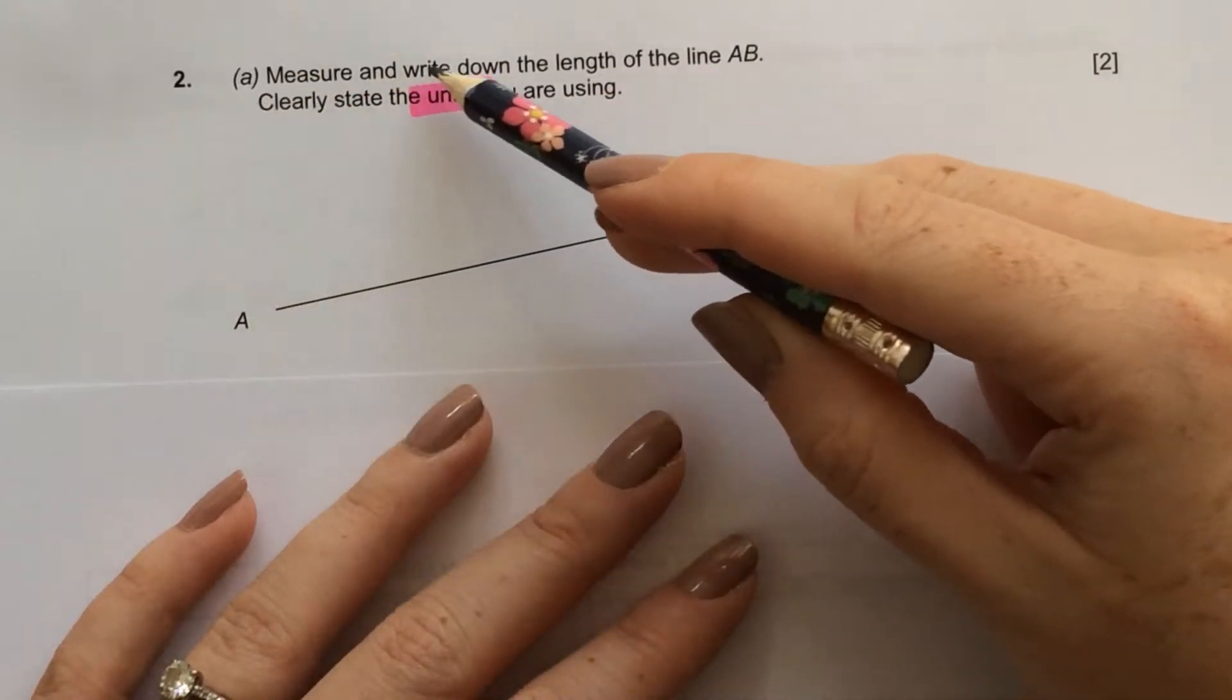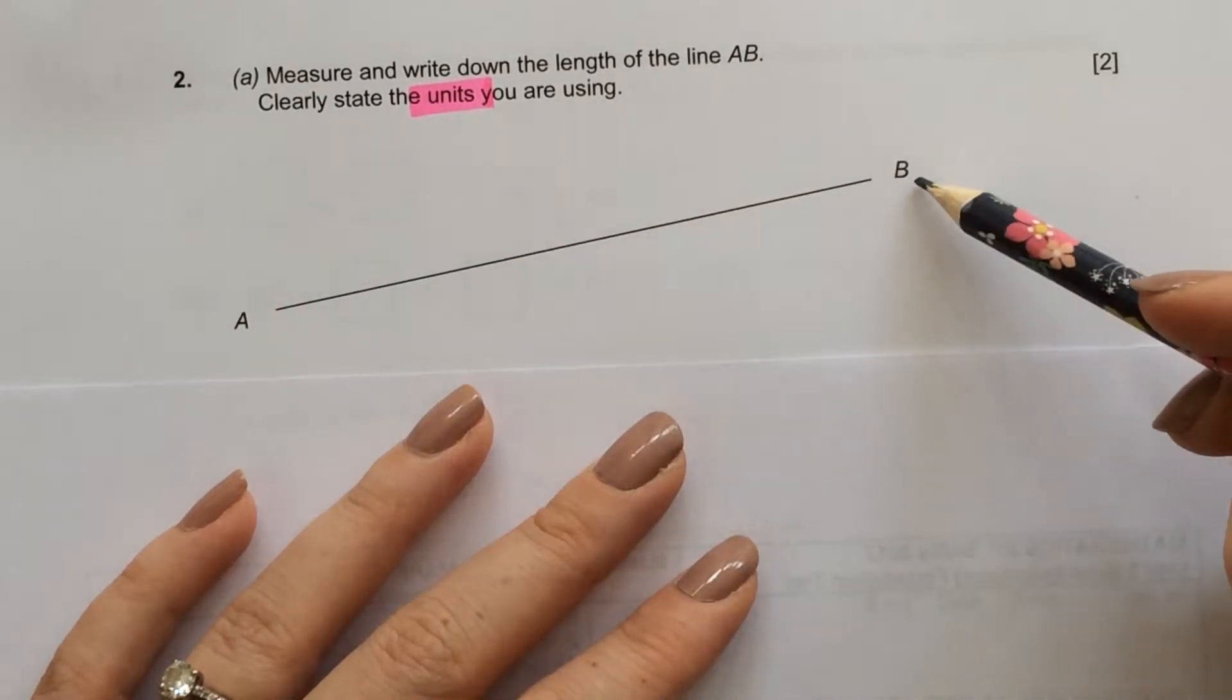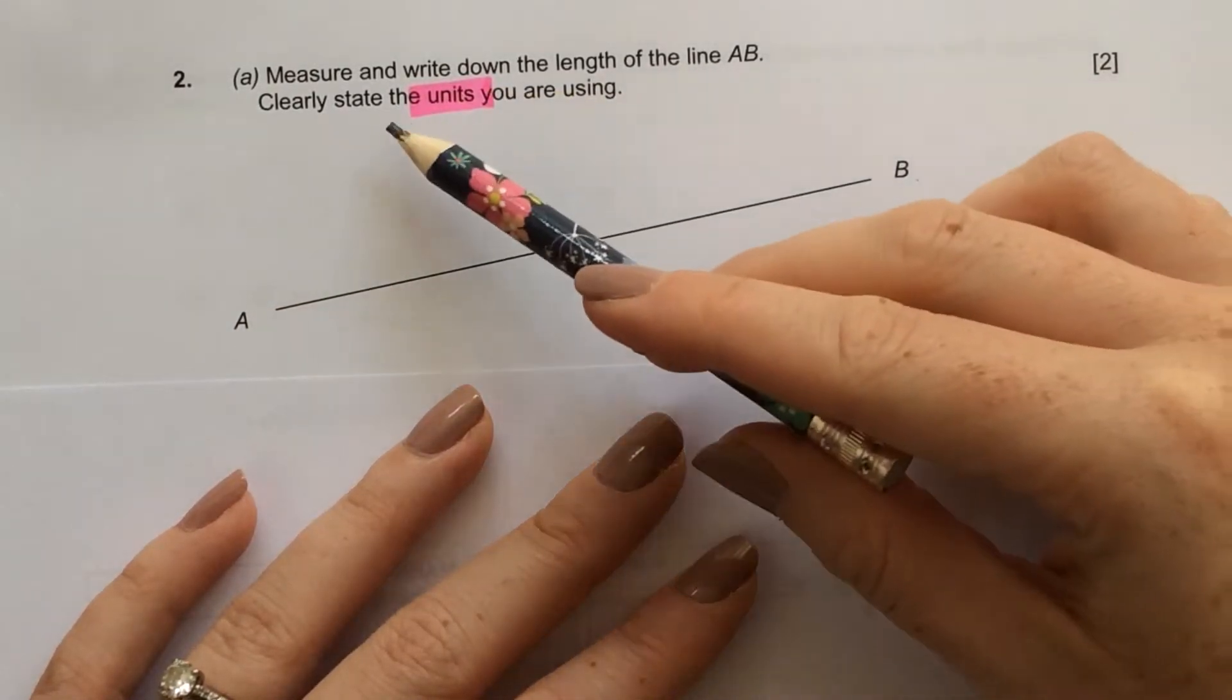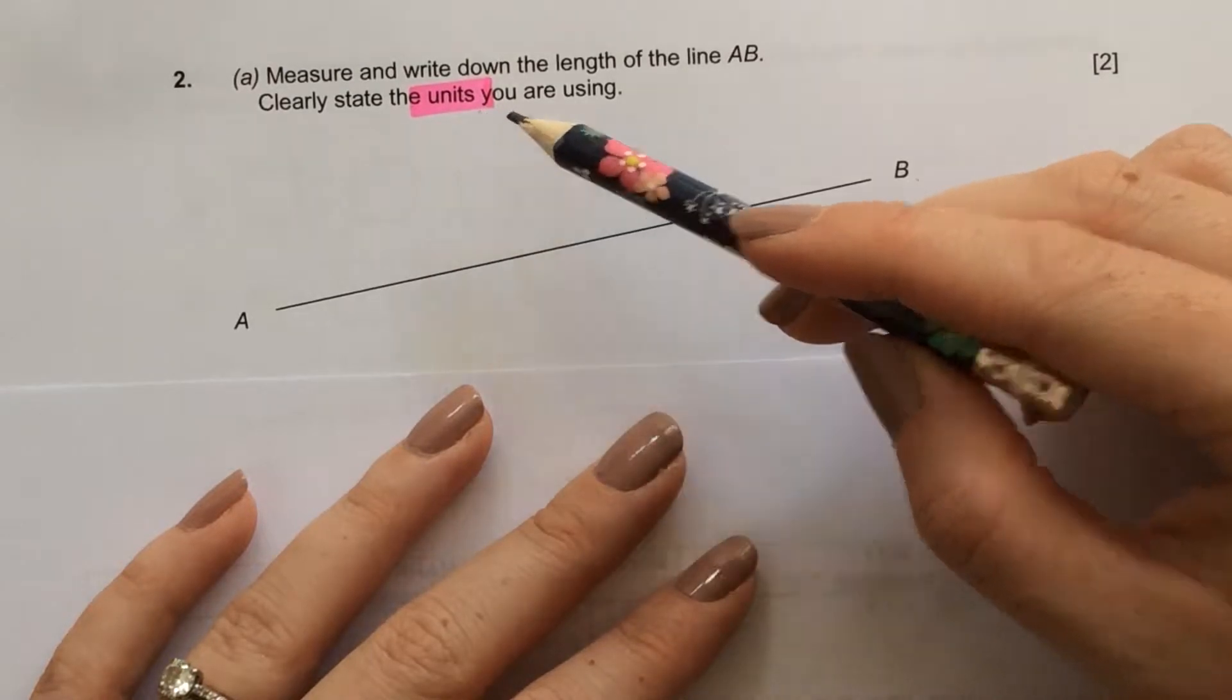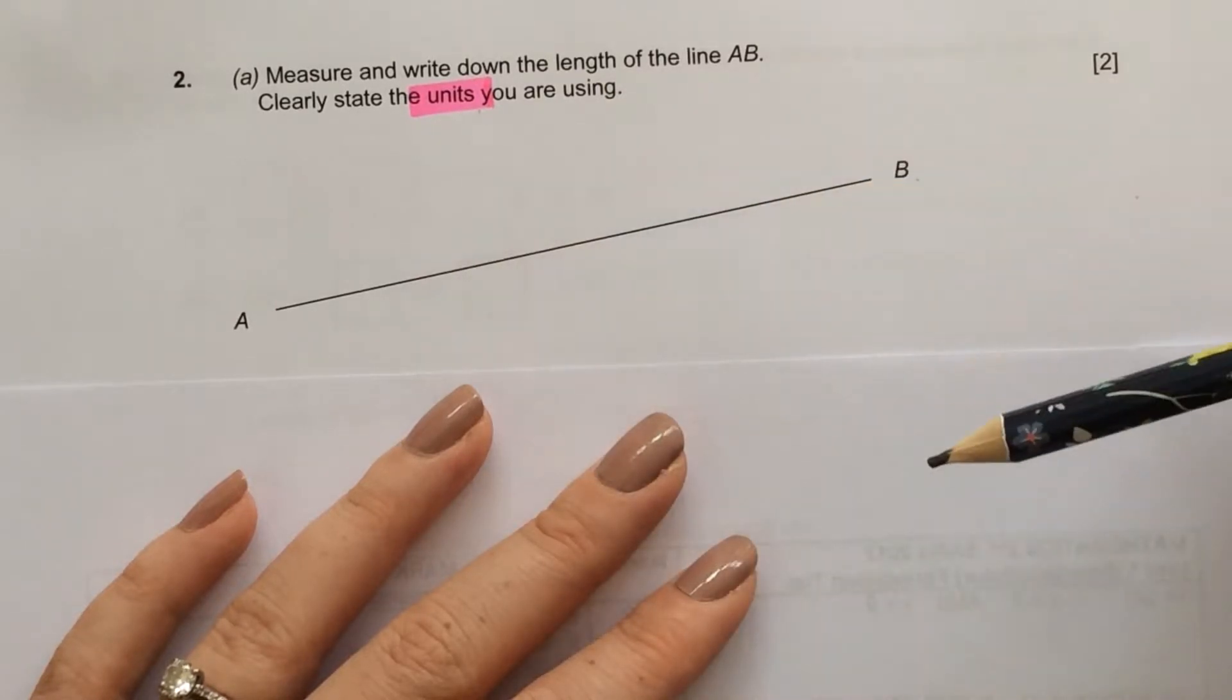Question 2, part A. Measure and write down the length of the line AB. So this is the line AB here, and it says clearly state the units you are using. When it says this, it usually means you'll get a mark for giving your units, so make sure you don't forget.